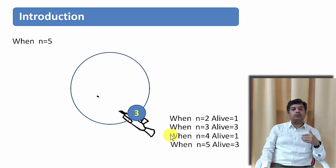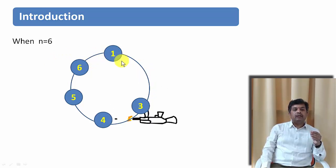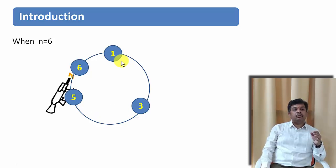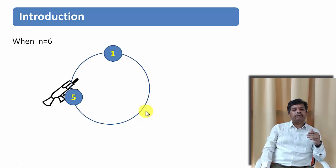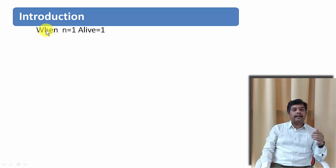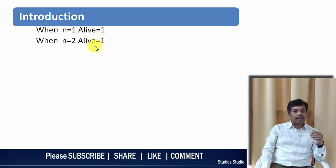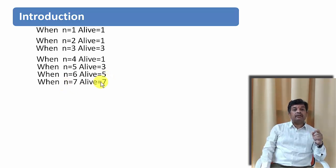Can we draw some conclusion? For N equals 6: person 1 kills person 2, gun goes to person 3. Person 3 kills person 4, gun to person 5. Person 5 kills person 6, gun to person 1. Person 1 kills person 3, gun to person 5. Person 5 kills person 1, and person 5 is alive. So when N equals 6, alive is 5. Continuing the pattern: N=1→1, N=2→1, N=3→3, N=4→1, N=5→3, N=6→5, N=7→7.